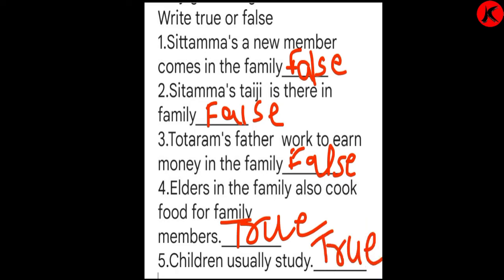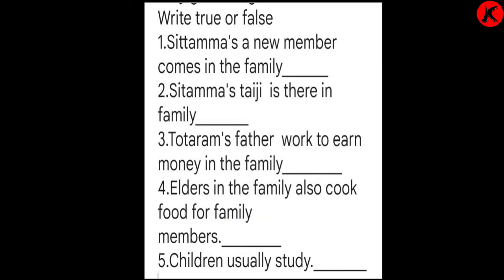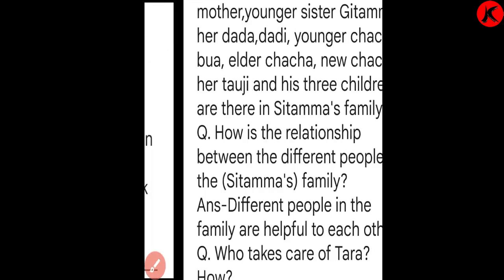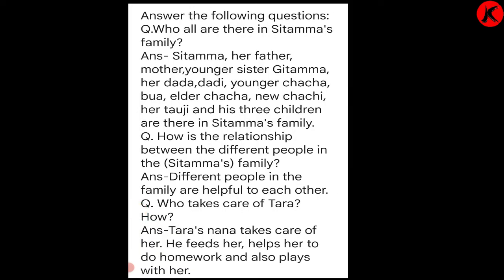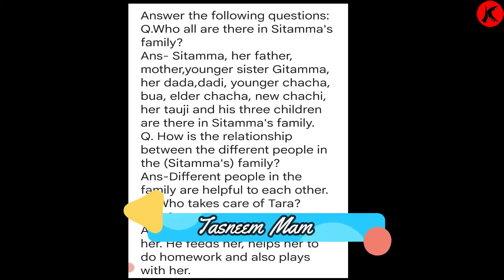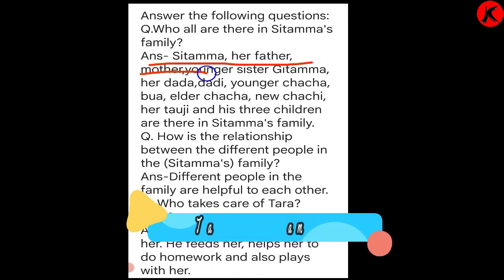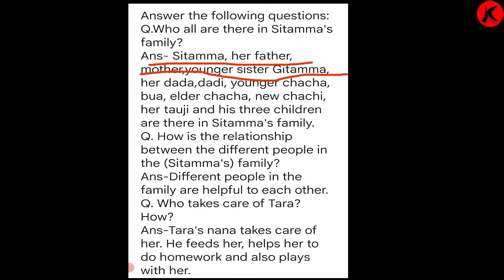Fill in the blanks and true or false — write in your notebook with very good handwriting. Next is question answers. First question: who all are there in Sitama's family? Sitama, her father, mother, younger sister Kitama, her dada-dadi, young chacha, elder chacha, new chaachi, her tao ji, and his three children are there in Sitama's family.